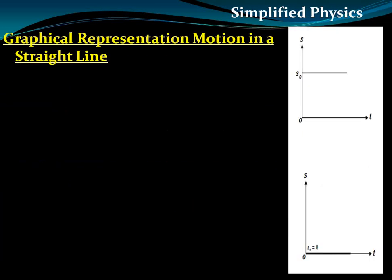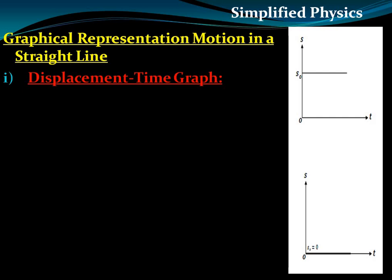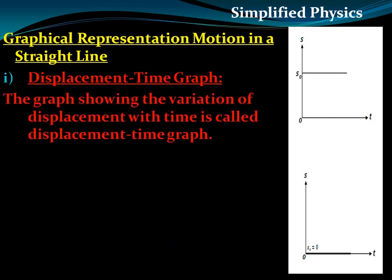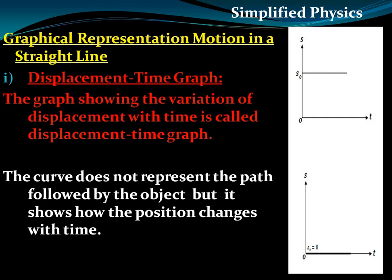Let's begin with graphical representation of motion in a straight line. The first one is the displacement-time graph. The displacement-time graph is simply the variation of displacement with time. The curve does not represent the path followed by the object, but it shows how the position changes with time — how displacement changes with time.